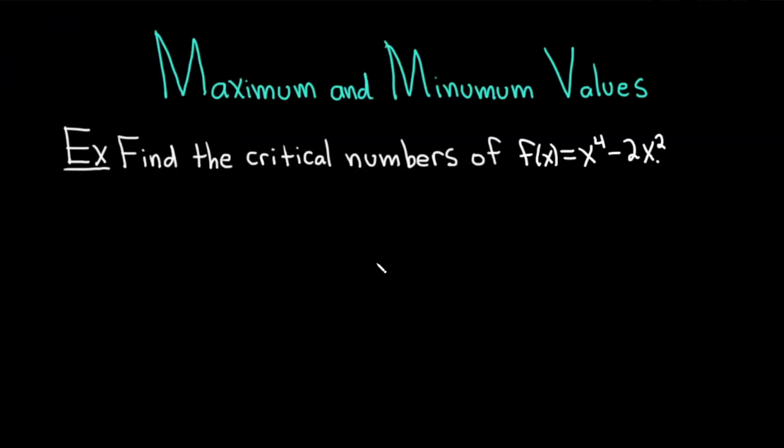Hi, everyone. It's the Mathsorcer here with Chegg. In this video, we're going to be discussing maximum and minimum values. Let's start by doing an example of finding critical numbers. The question says, find the critical numbers of f(x) = x^4 - 2x^2. Let's go ahead and work through it.